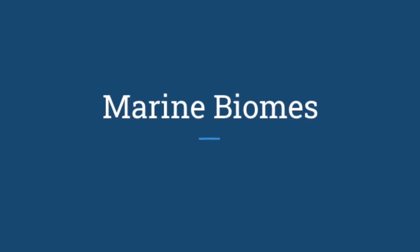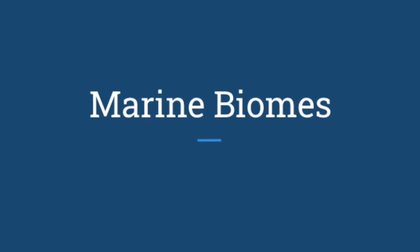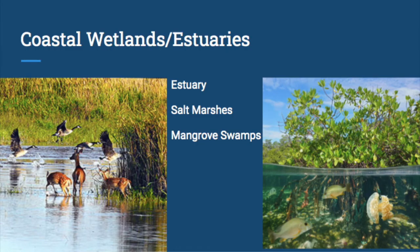Moving on to marine biomes — the first is coastal wetlands and estuaries. Coastal wetlands are similar to freshwater wetlands in that they are partially submerged areas of land, but unlike freshwater wetlands they are submerged with salt water. You have things like salt marshes, estuaries, and mangrove swamps. A saltwater marsh has emergent vegetation with water underneath, and is a very productive ecosystem. They're very common where freshwater meets salt water and along coasts — much of New York used to be salt marshes before the city was developed.